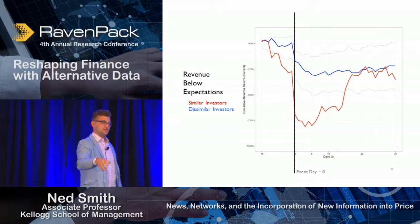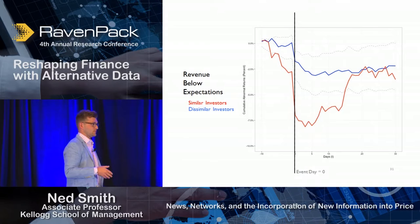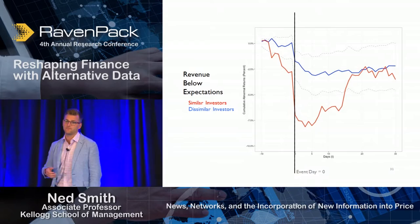They are responding very quickly and rapidly, and potentially not very accurately — after about 10 or 15 days we see a drift in that price back up. As opposed to firms that have dissimilar investors: their response comes down as we would expect, but not to the same magnitude, and we don't see nearly the same level of reversion or drift back.